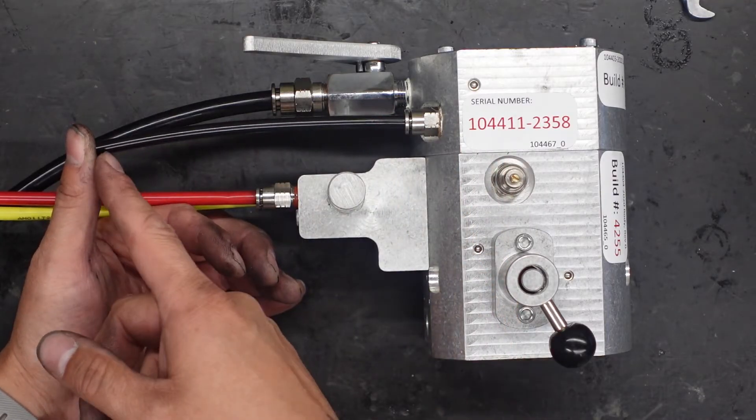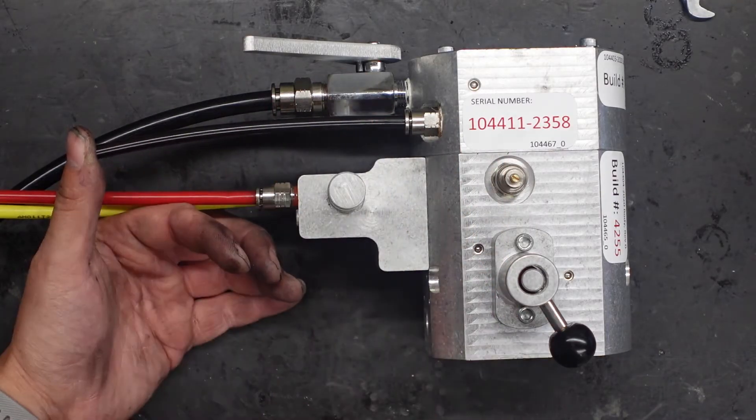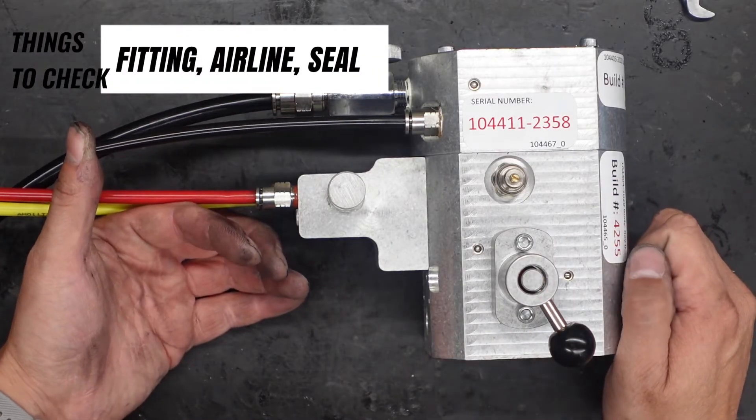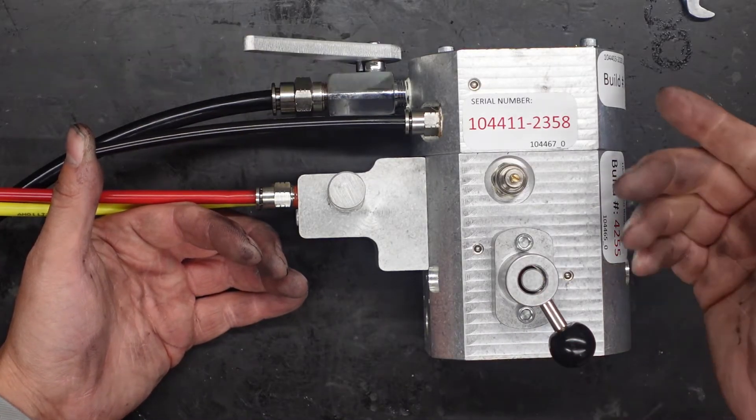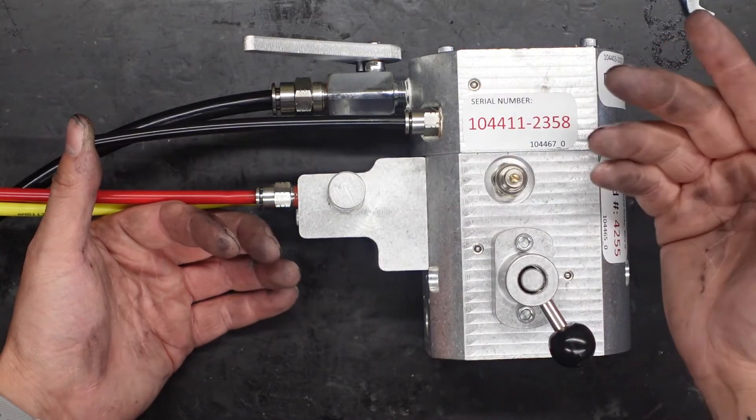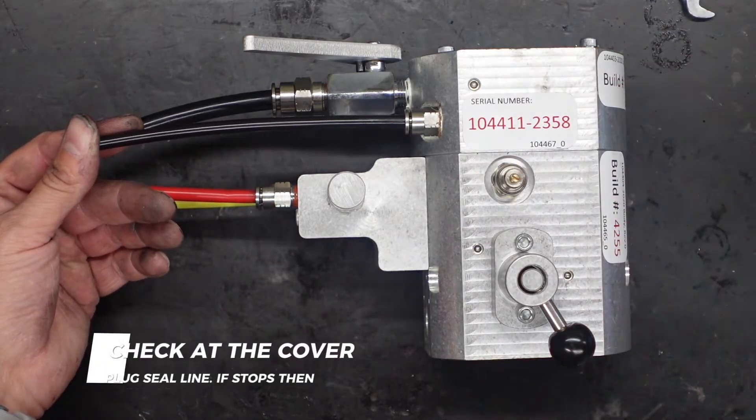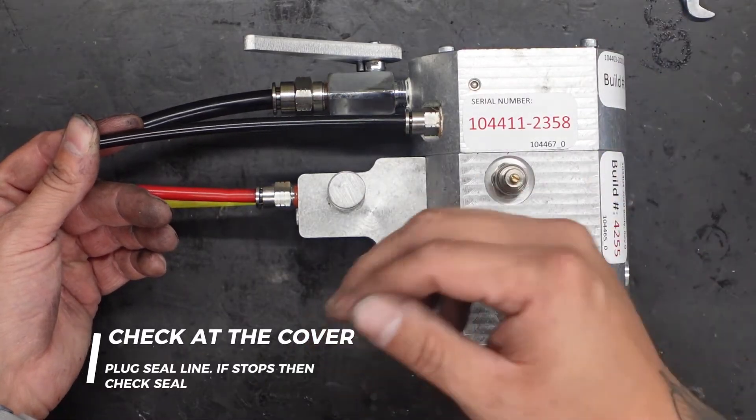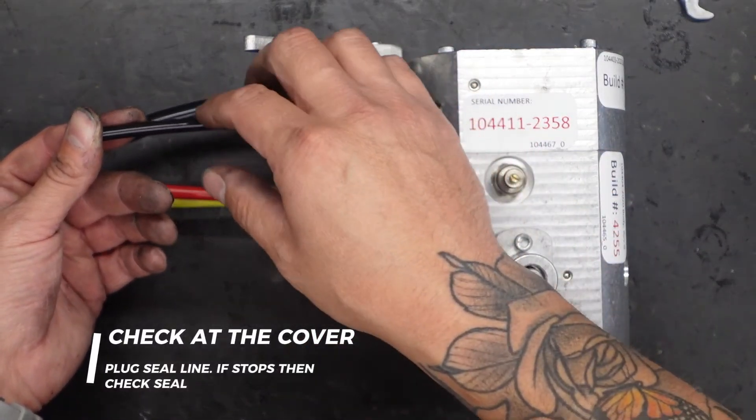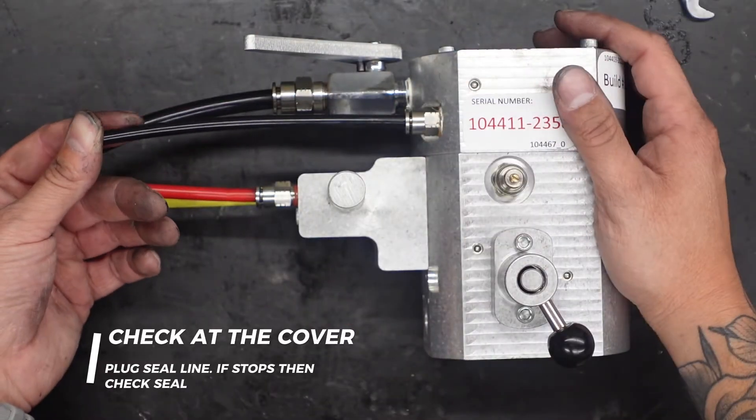So if that cycling stops here at the control box then it's an issue with something from here on up. It can be a fitting, it can be a hole in the seal, it can be a hole in the airline, a kinked airline, or all the above. So then you would have to go up to the cover itself and disconnect that airline there on the seal and check it.